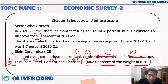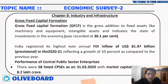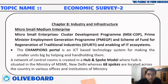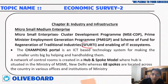There were 58 listed central public sector enterprises as of 31st March 2020 with a market capitalization of rupees 8.2 lakh crore. For MSMEs, key schemes include the Cluster Development Programme, PM Employment Generation scheme, and the Scheme of Fund for Regeneration of Traditional Industries, SFURTI. The Champions portal is an IT-based technology system for enabling MSMEs, set up in a hub-and-spoke model with New Delhi as the hub and 68 spokes across the country.